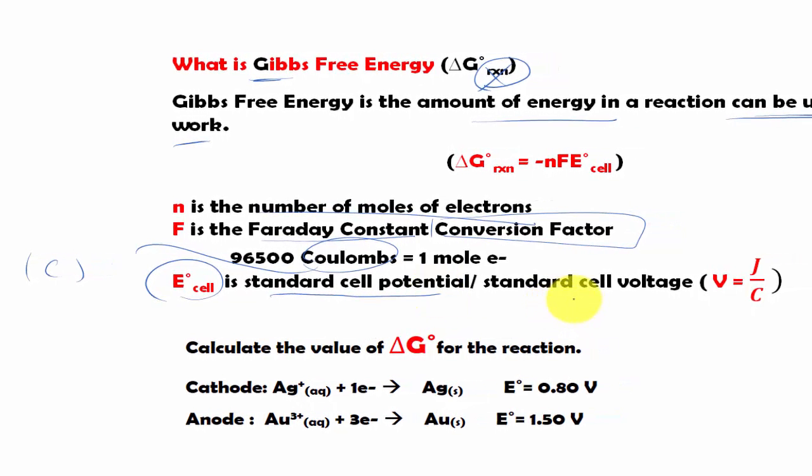Now sometimes it has another name to it. It is called the standard cell voltage. Where is the voltage coming from? It is because of the V from the E°_cell measured in volts.